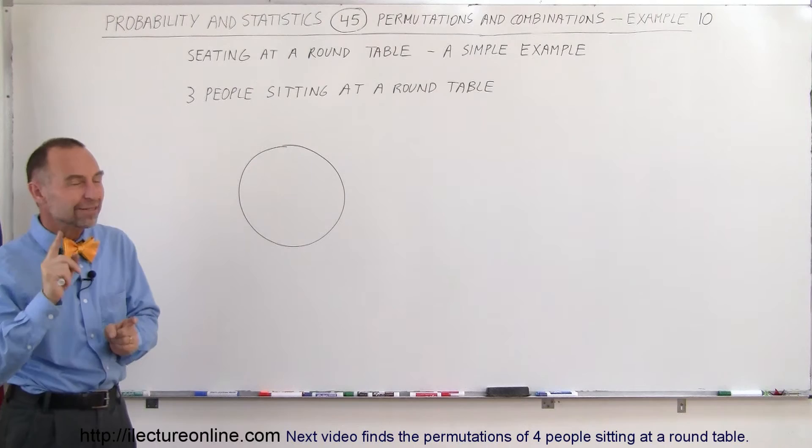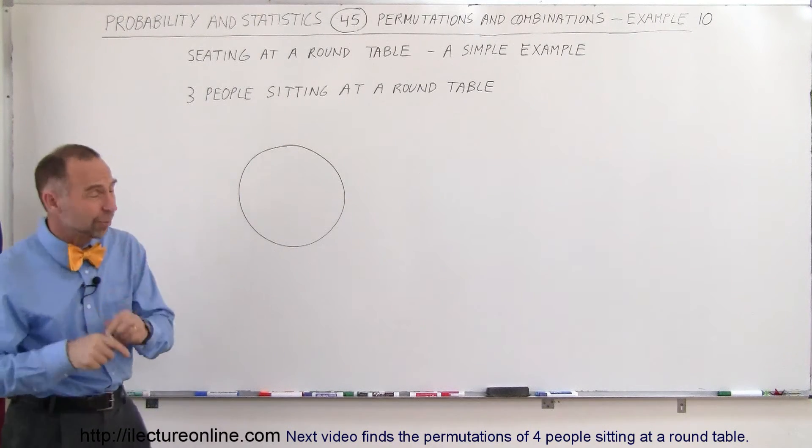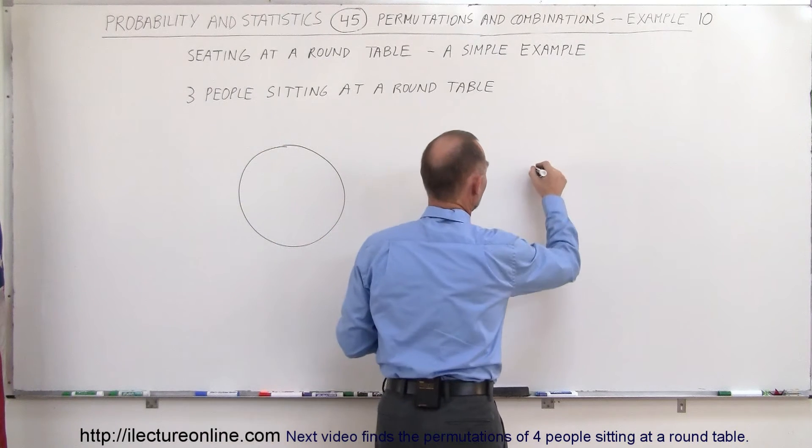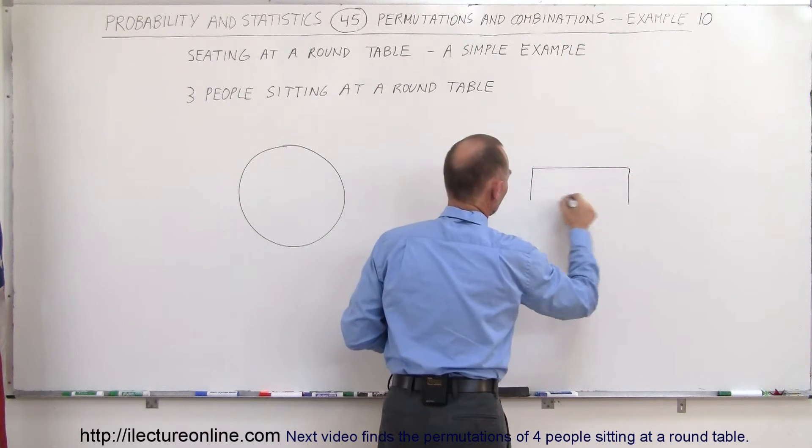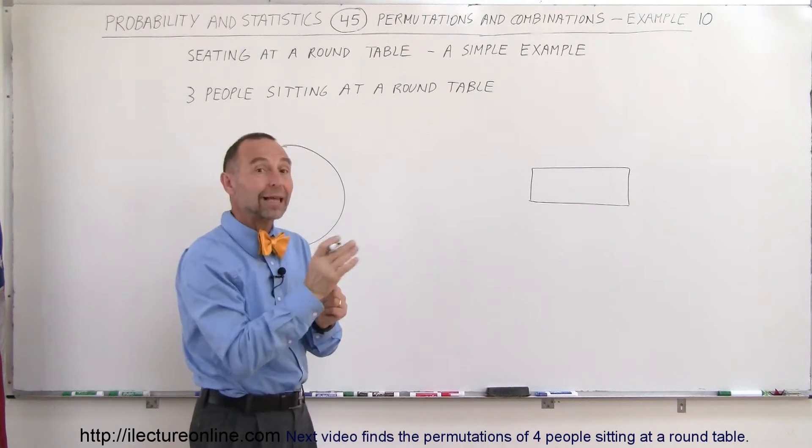And the answer is indeed different from sitting them around a rectangular table. The difference is, let me show you, a rectangular table looks like this. A rectangular table has a unique shape in that when you see the person there, there's some uniqueness about that position.